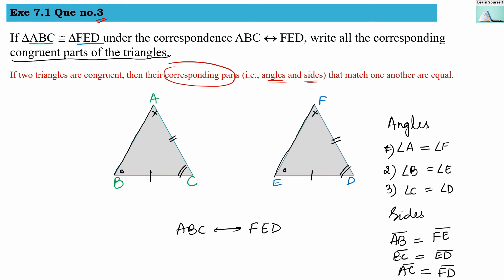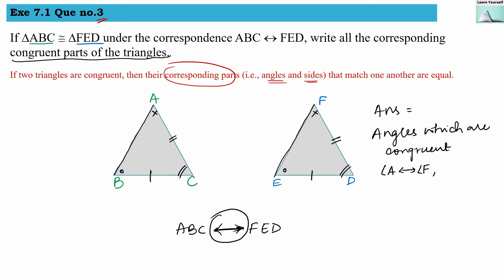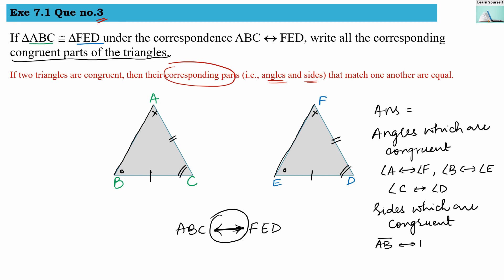In mathematical language, we write congruency by replacing the equals sign with the congruency sign. So the angles which are congruent: angle A is congruent with angle F, angle B is congruent with angle E, and angle C is congruent with angle D. For the sides: side AB is congruent with side FE, side BC is congruent with side ED, and side AC is congruent with side FD.